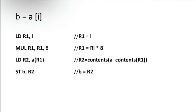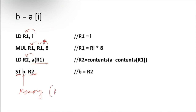Here is a small snapshot of code: load I into R1, then multiply R1 by 8 and store the result into R1, load R1 to R2, then ST — which is store — store the value of R2 to memory location B. B resides in physical memory.